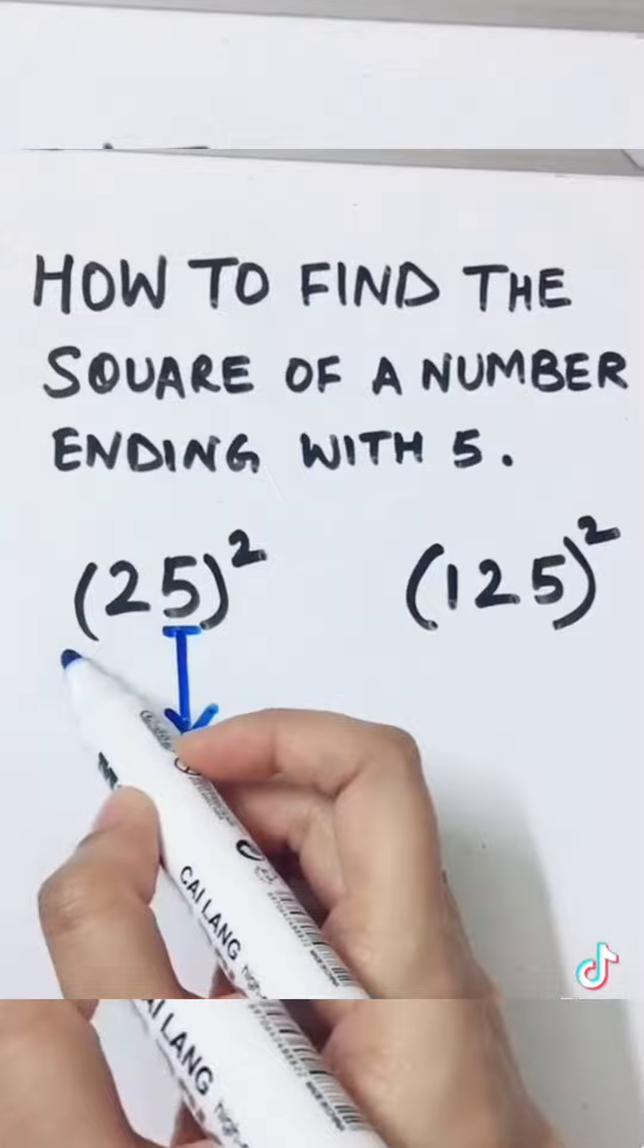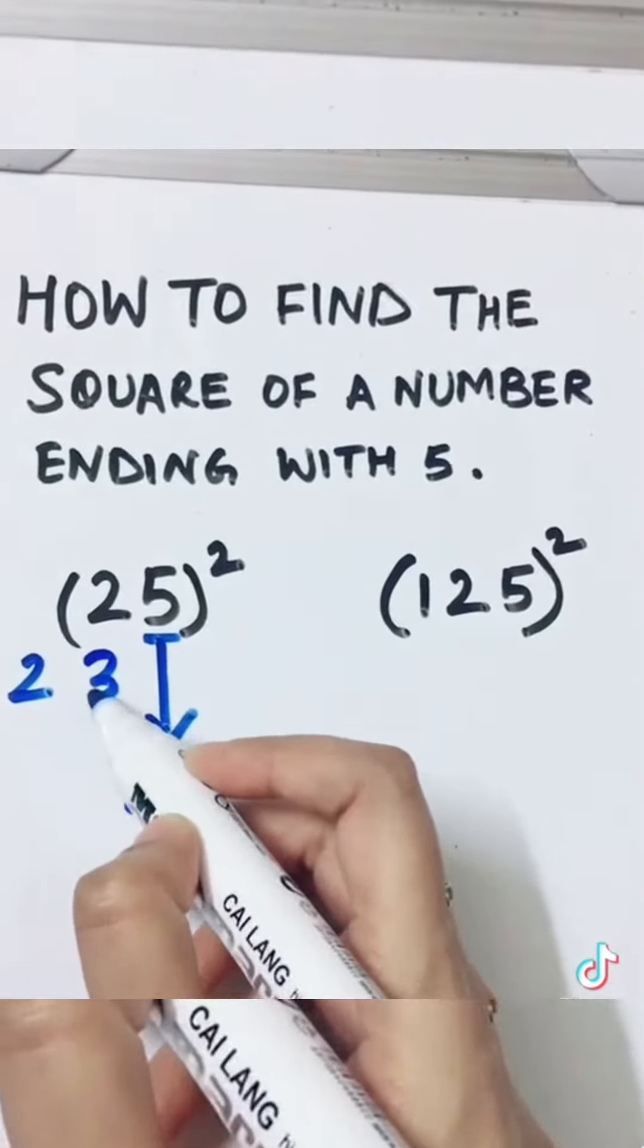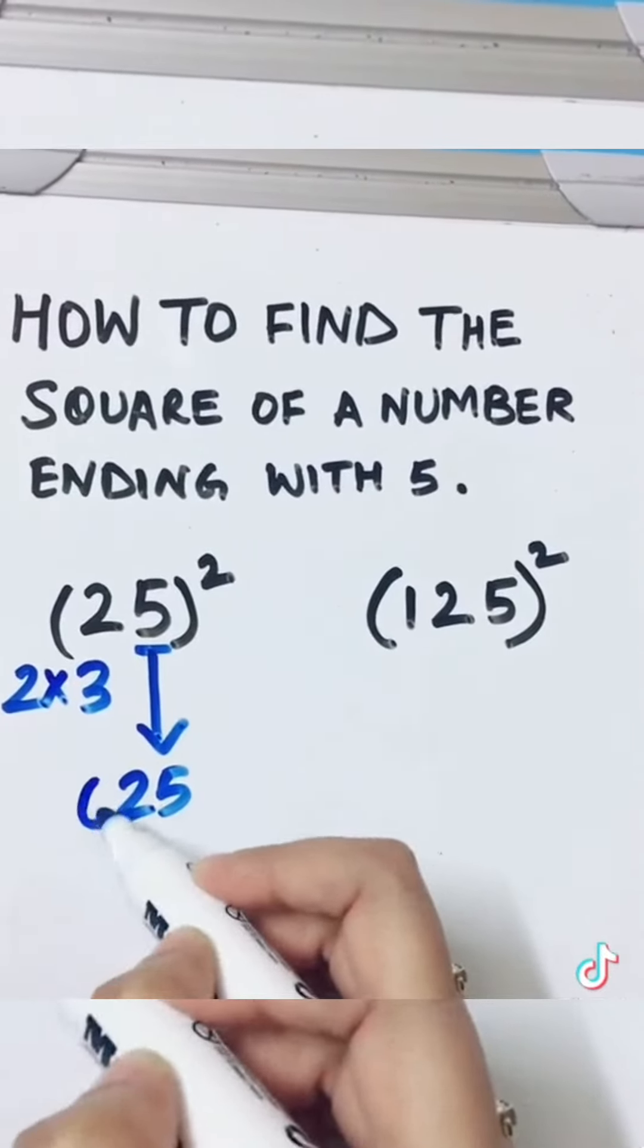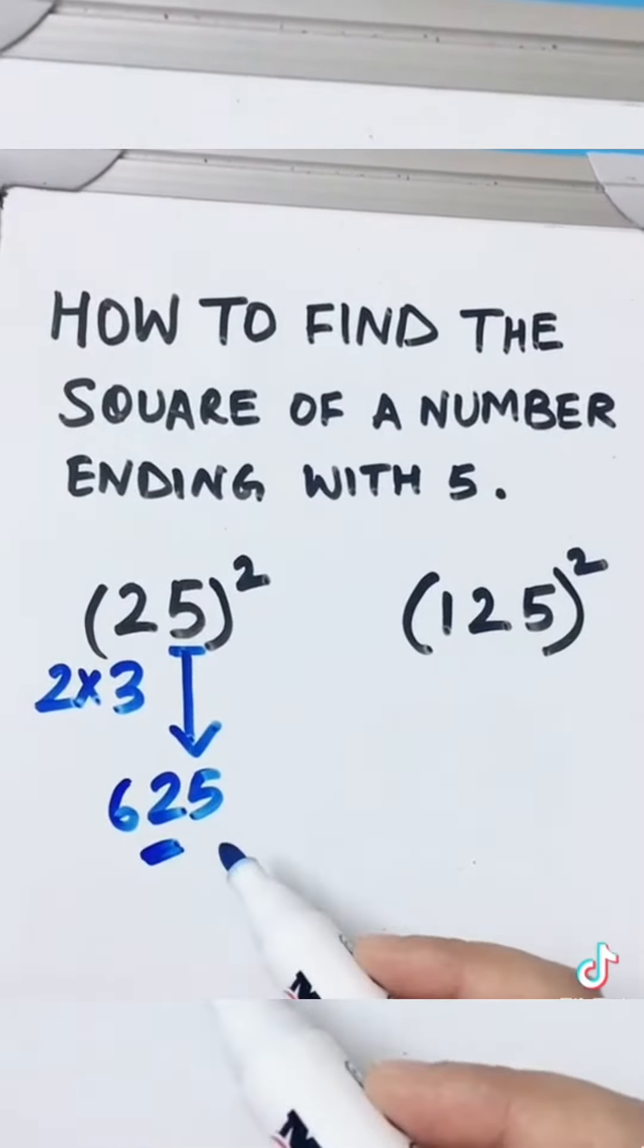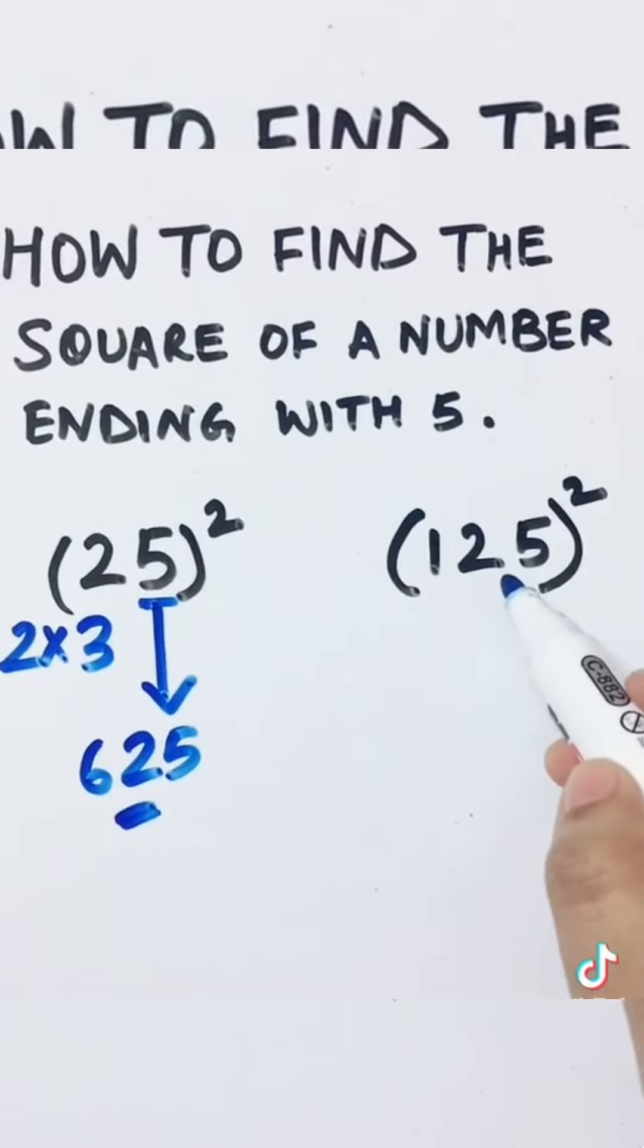This number 2, and write the number which comes after that, 3. And then we multiply 2×3, which is 6. So this is your answer, 625. Very easy. Now for 125 squared, again we take...